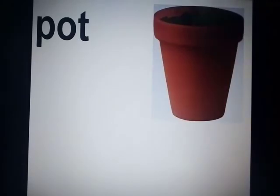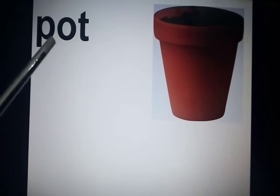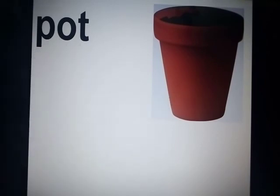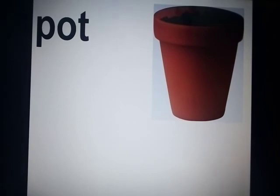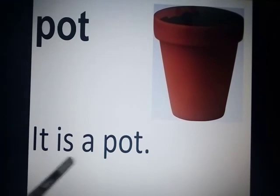Now look at the next picture. What is this? It's a pot — P-O-T. Pot means gamla. We use a pot for plants — we put soil in it, plant seeds, water it, and the plant grows. Pot is starting with P, and P is a consonant letter. So the sentence is: it is a pot. We have used 'a' here because P is a consonant family member.